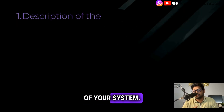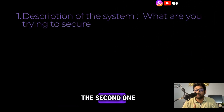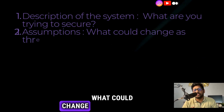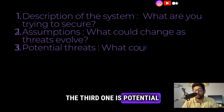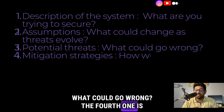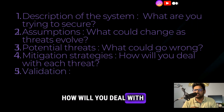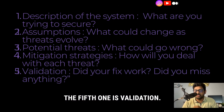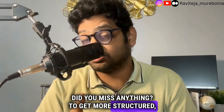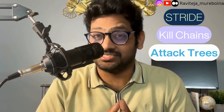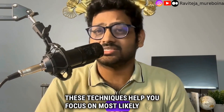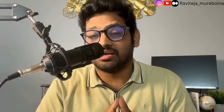So how do you actually build a threat model? Imagine it as a roadmap for your app's security. A good threat model includes these key components: first, a description of your system — what are you trying to secure? Second, assumptions — what could change as threats evolve? Third, potential threats — what could go wrong? Fourth, mitigation strategies — how will you deal with each threat? And fifth, validation — did your fix work, and did you miss anything? To get more structured, there are frameworks like STRIDE, kill chain, and attack trees that help you systematically brainstorm threats. These techniques help you focus on the most likely risks without wasting time on unlikely scenarios.